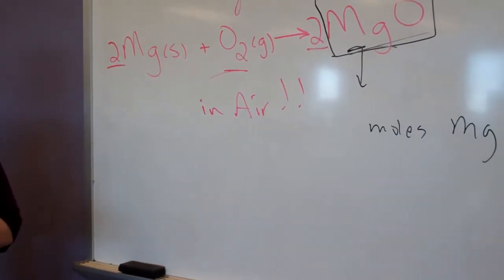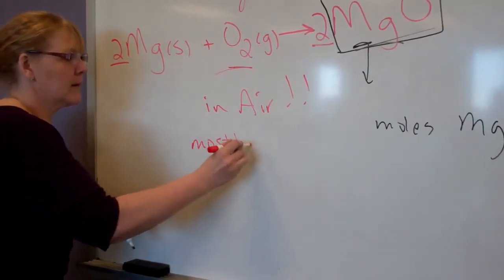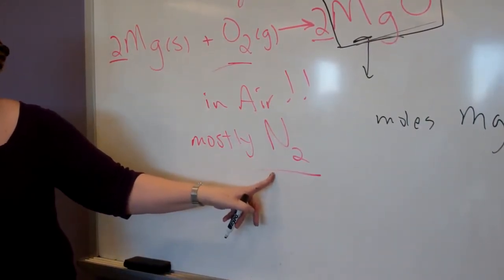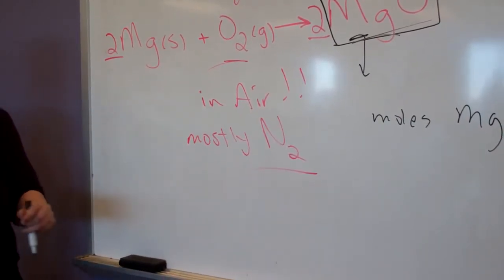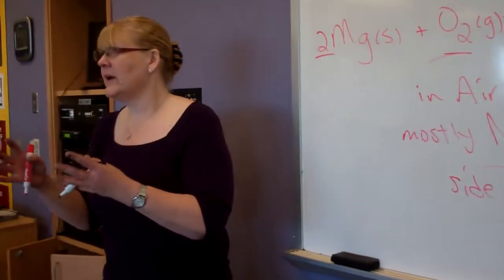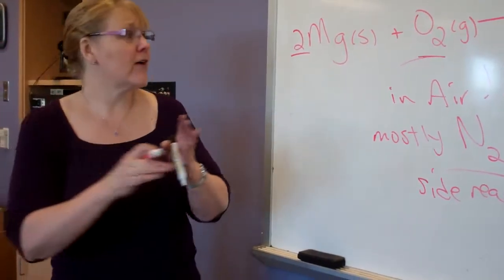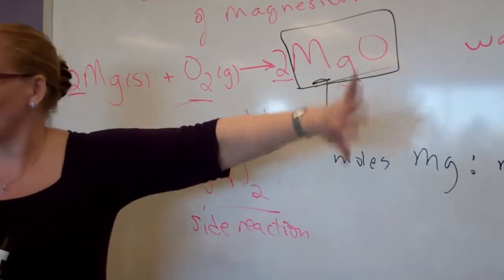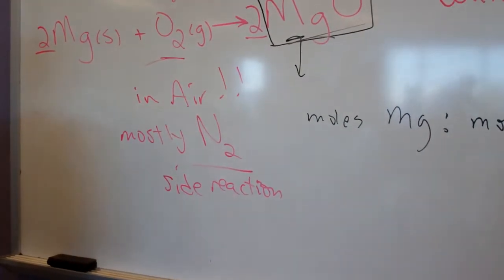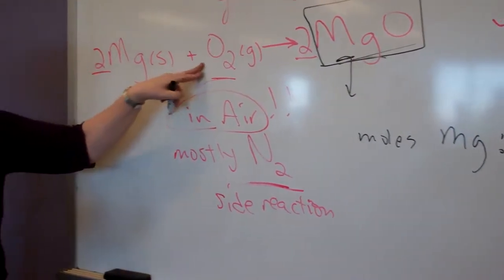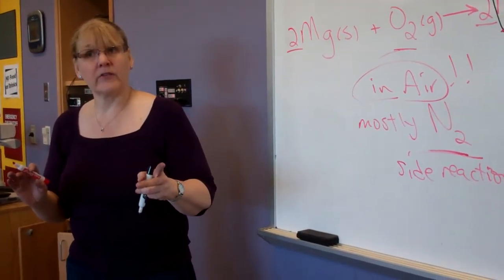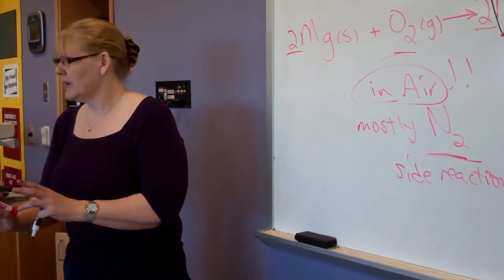What is air? Mostly nitrogen. If magnesium can react with the oxygen, can it also react with the nitrogen? Yes — that's a problem. That's a side reaction. A side reaction is something that occurs naturally because of the environment, making stuff we don't want — in this case, magnesium nitride. So we're going to get oxide and nitride. In order to get just magnesium oxide at the end, we're going to have to add some water to get rid of the nitride products.